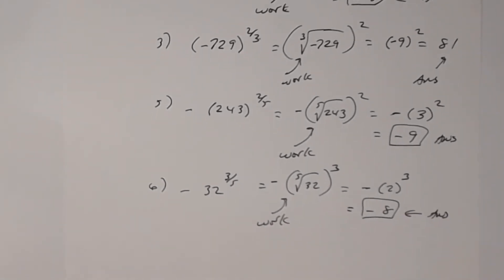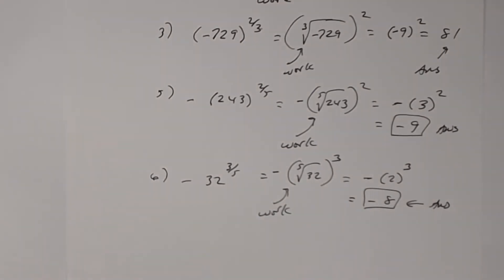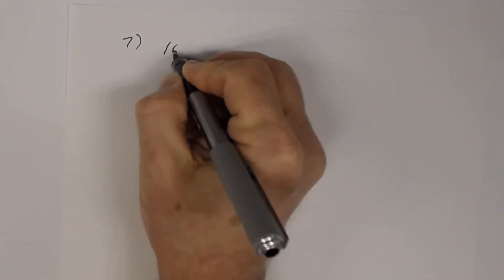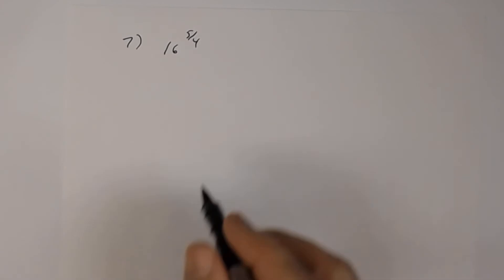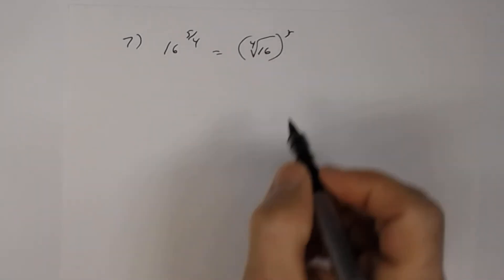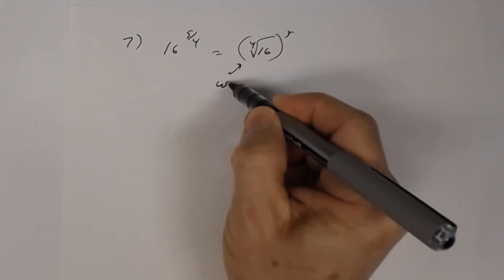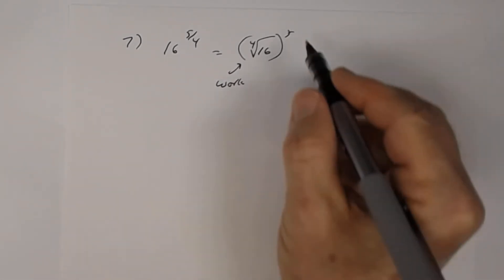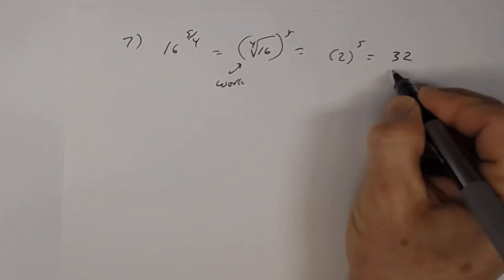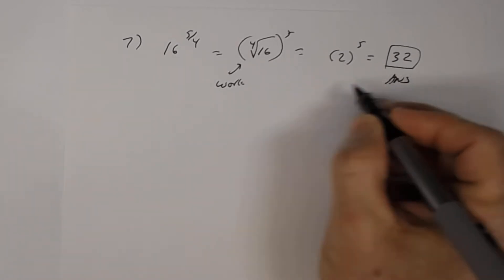Number 7: 16 to the 5/4. This becomes the fourth root of 16, raised to the 5th power. The fourth root of 16 is 2, and 2 to the 5th power is 32. So the answer is 32.